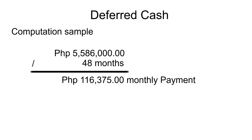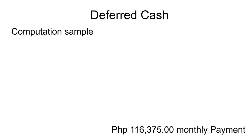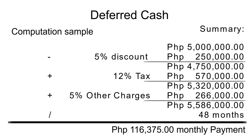The advantage of choosing deferred cash payment is that there is no need to put a one-time cash payment for your purchase price. You can pay on a monthly amortization basis of one hundred sixteen thousand three hundred seventy-five. The good thing with this is that there is no interest involved.